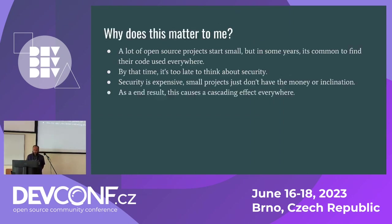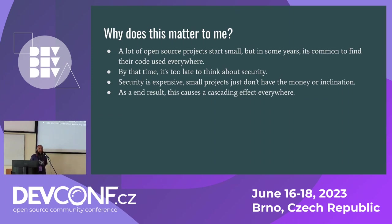So why are we basically here? We are here to talk about secure development. When people talk about secure development, they normally talk about how I can write my code in a way that is secure. But that's not really always the case. Secure development is not only secure code, but it's the process of making sure that your system is secure, your project is secure — from the time when you design the project, to when you write the code, to when you build, run, and develop your code.